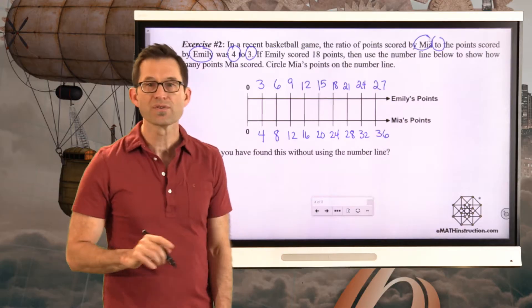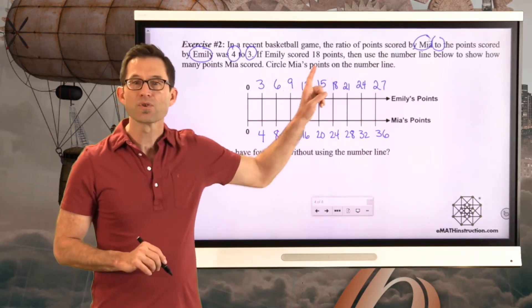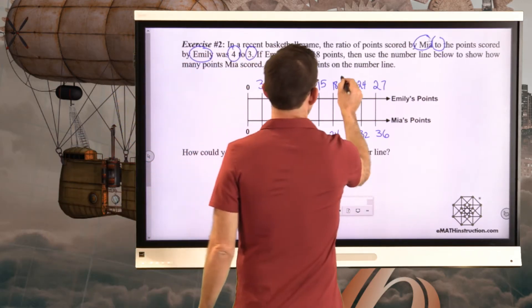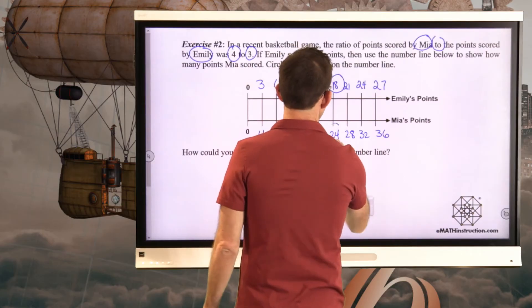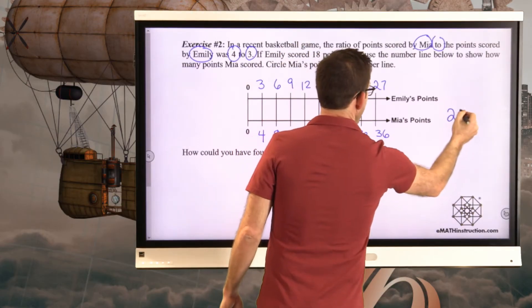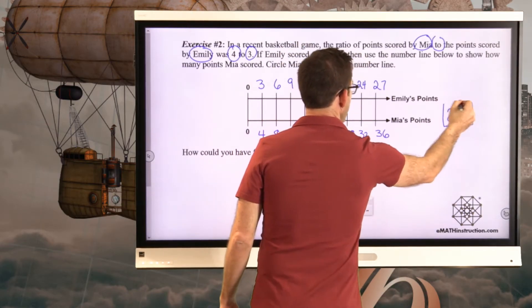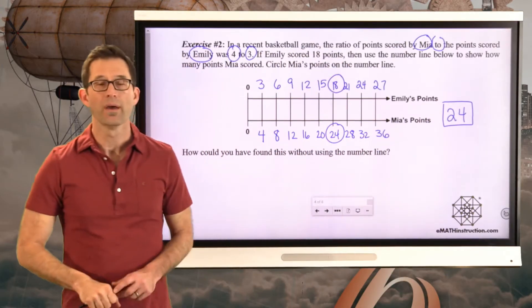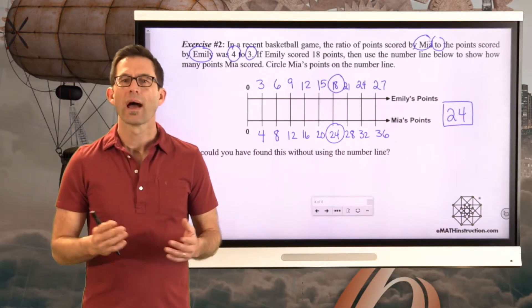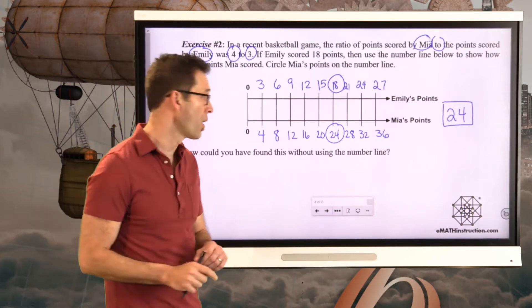So there's our double number line. Now what do we know? Emily scored 18 points. So therefore Mia must have scored 24. Now the question becomes, how could we have done that without the double number line? And this is where it gets to be kind of really cool.